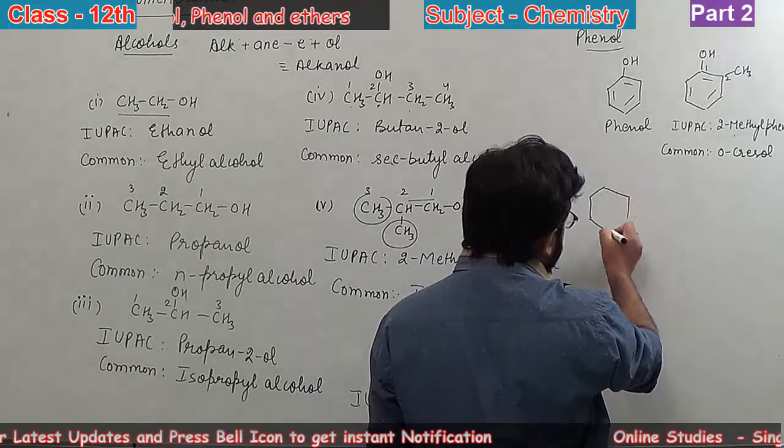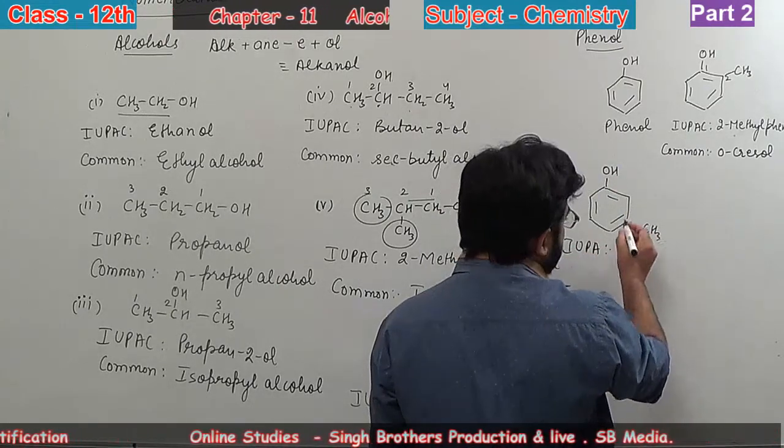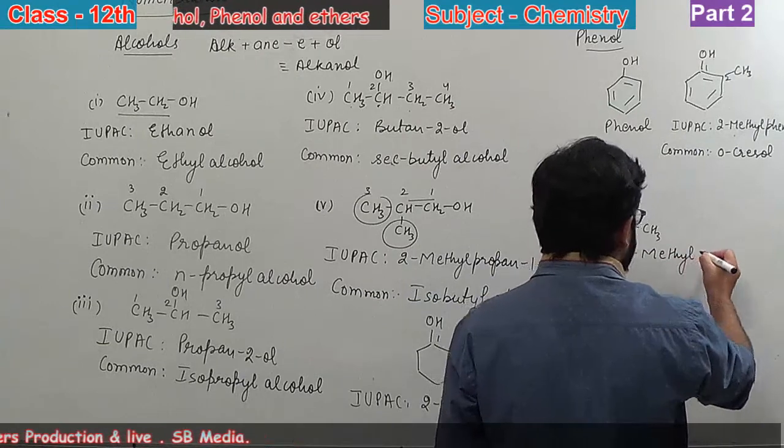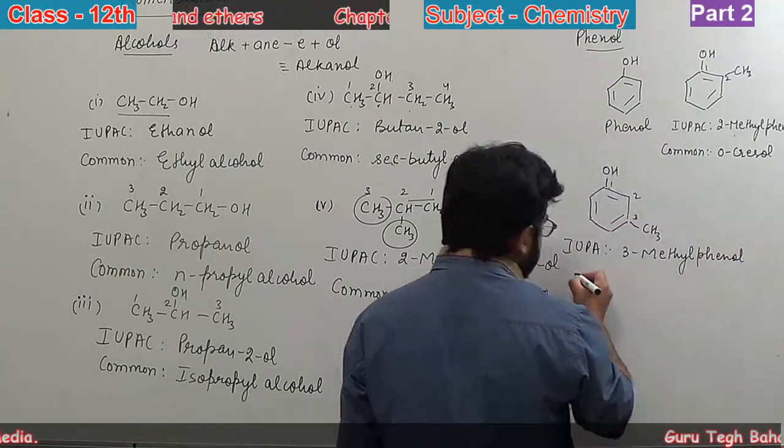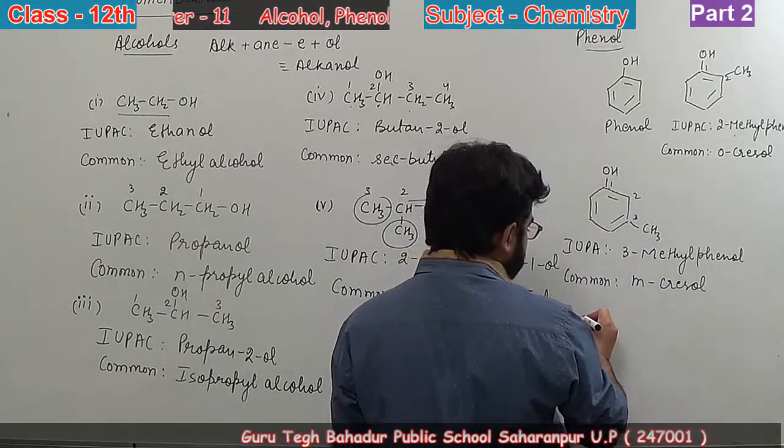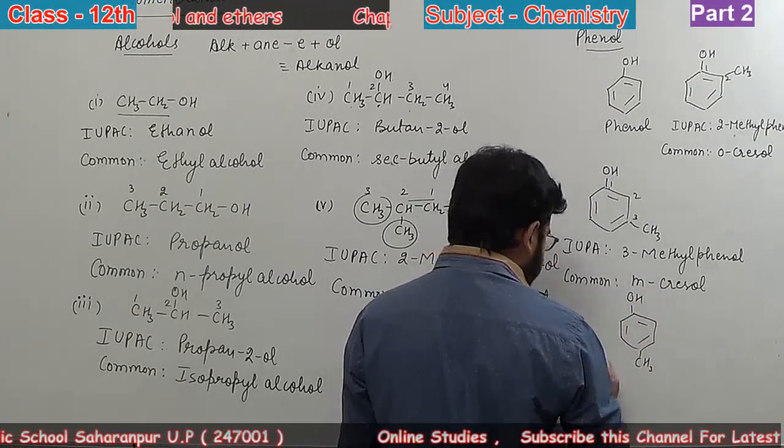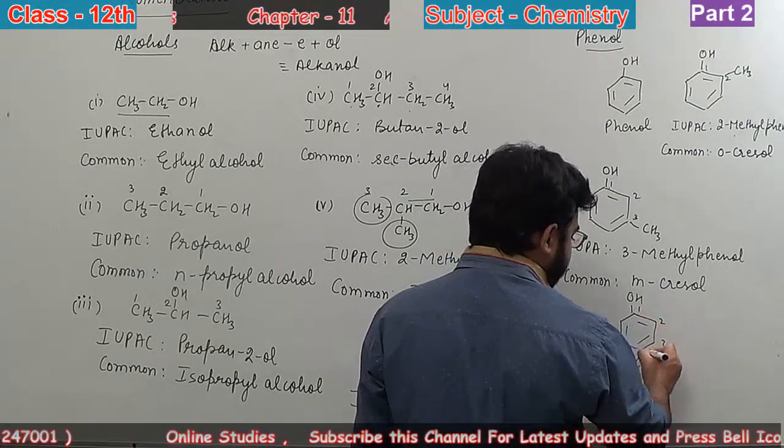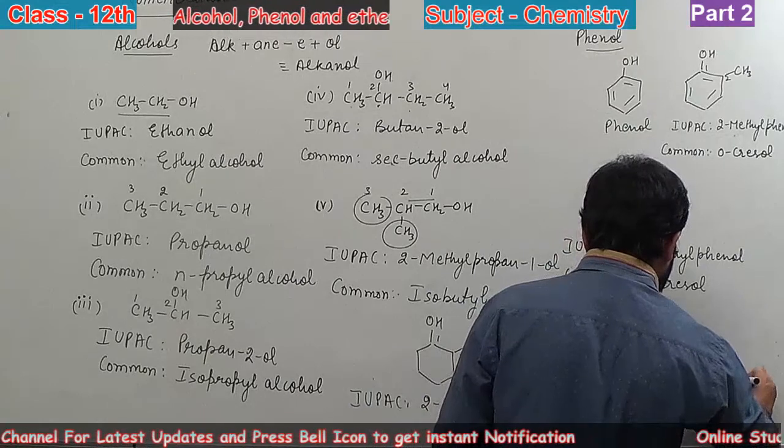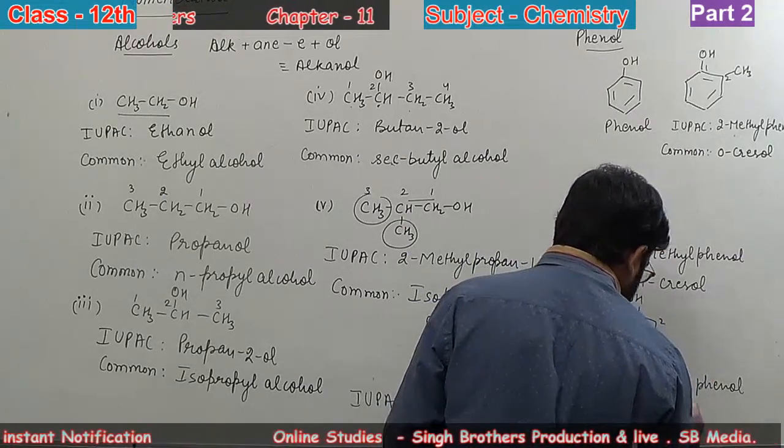Next one: OH and CH3 at meta position. IUPAC name - numbering 1, 2, 3, so 3-methylphenol. Common name is meta-cresol. Third one: OH and CH3 at para position. IUPAC name - 1, 2, 3, 4 - so 4-methylphenol. Common name is para-cresol.